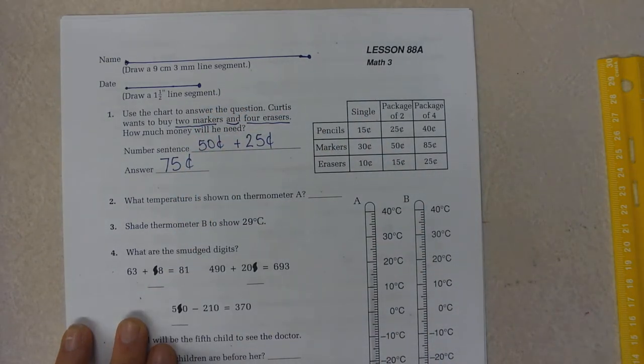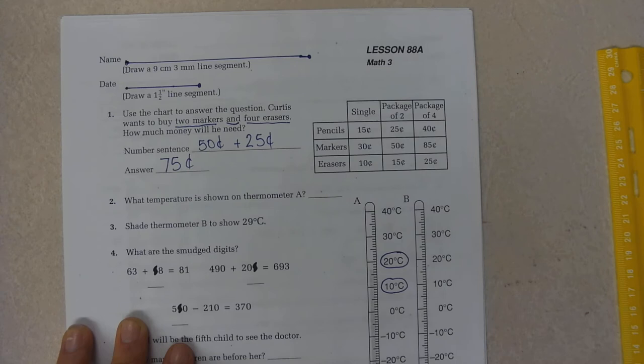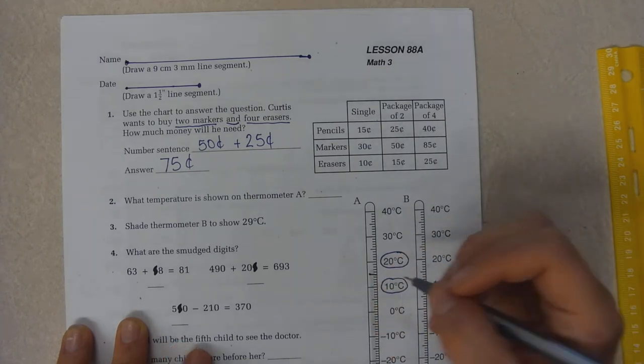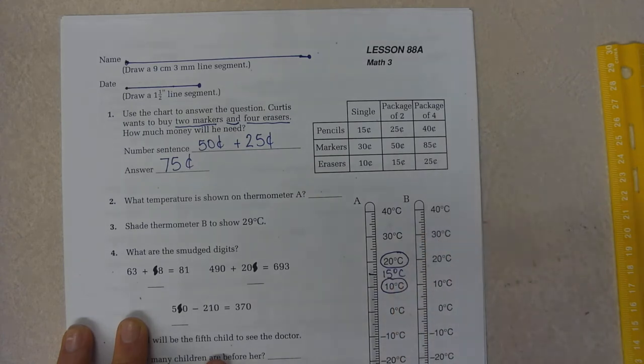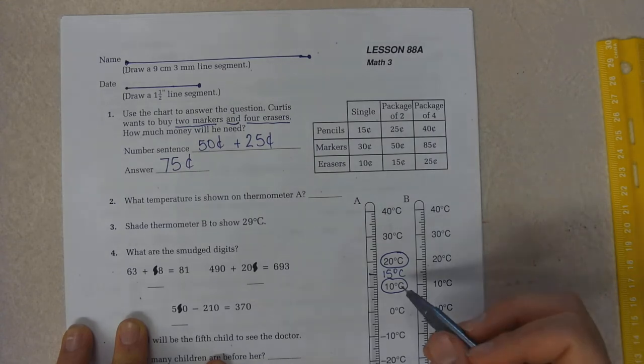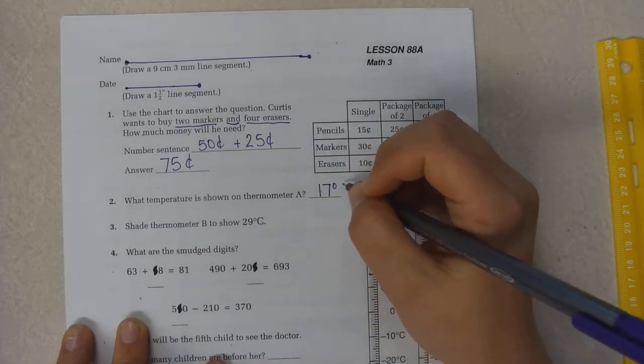What temperature is shown on thermometer A? If I look at thermometer A, it is between 10 degrees Celsius and 20 degrees Celsius. So this halfway mark would be 15, and there's two more tick marks above that, so 15 plus 2 would be 17 degrees Celsius.